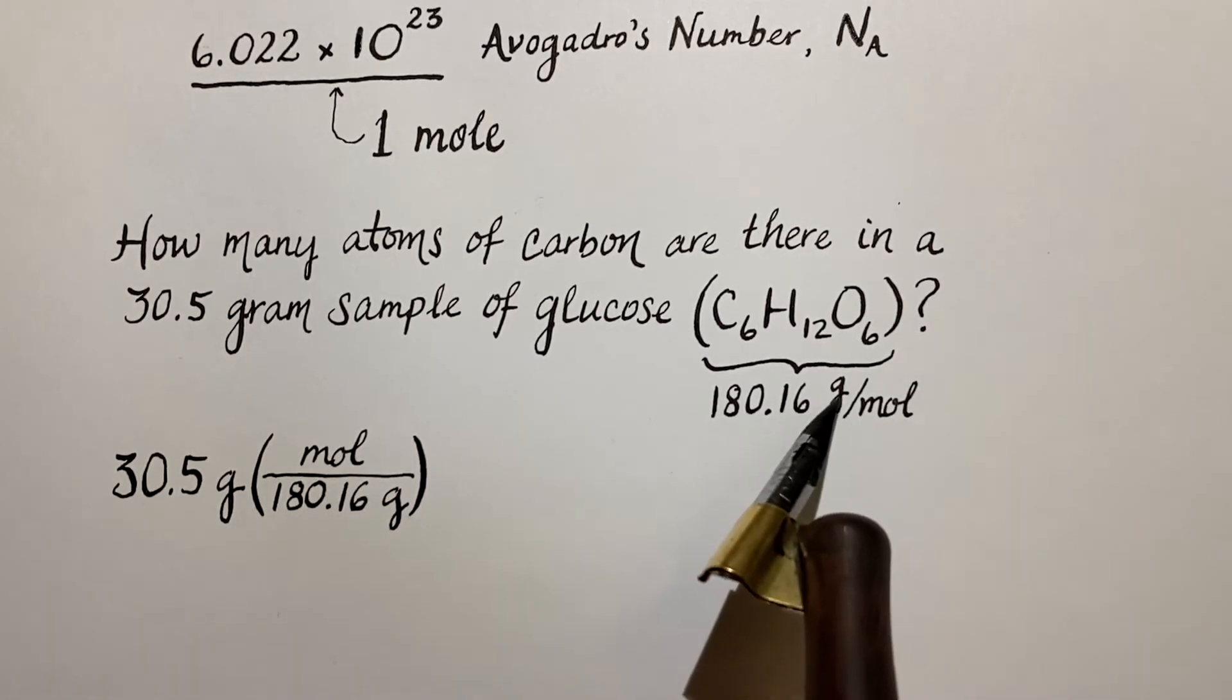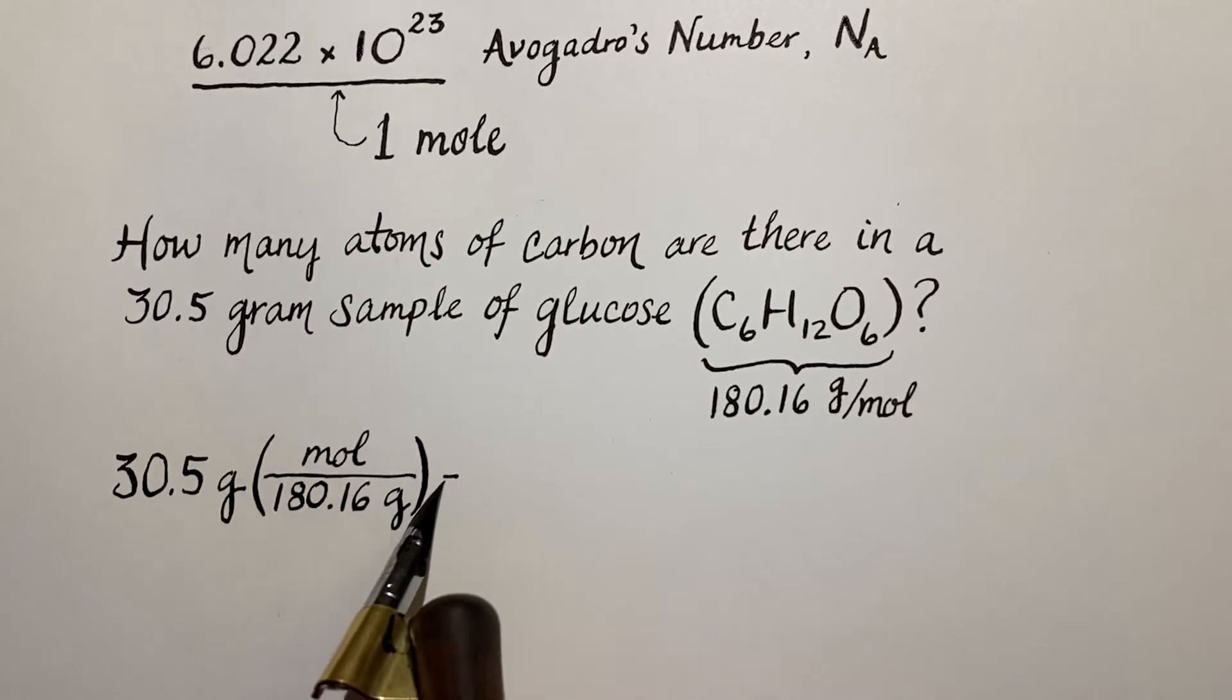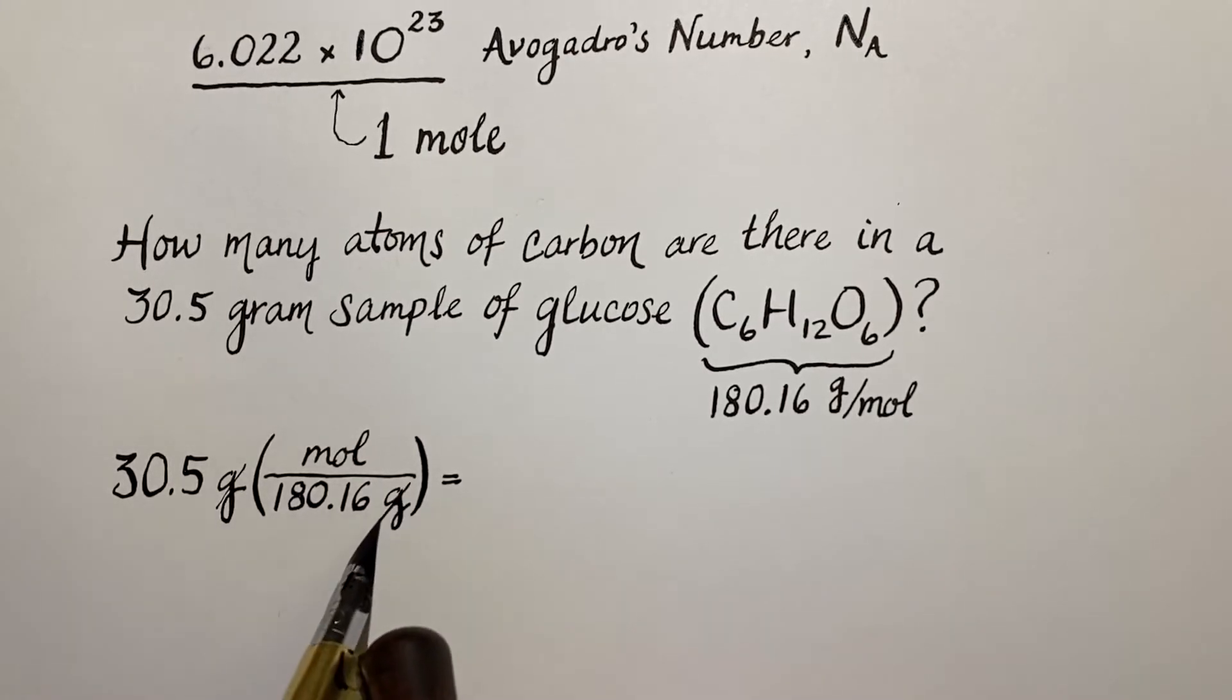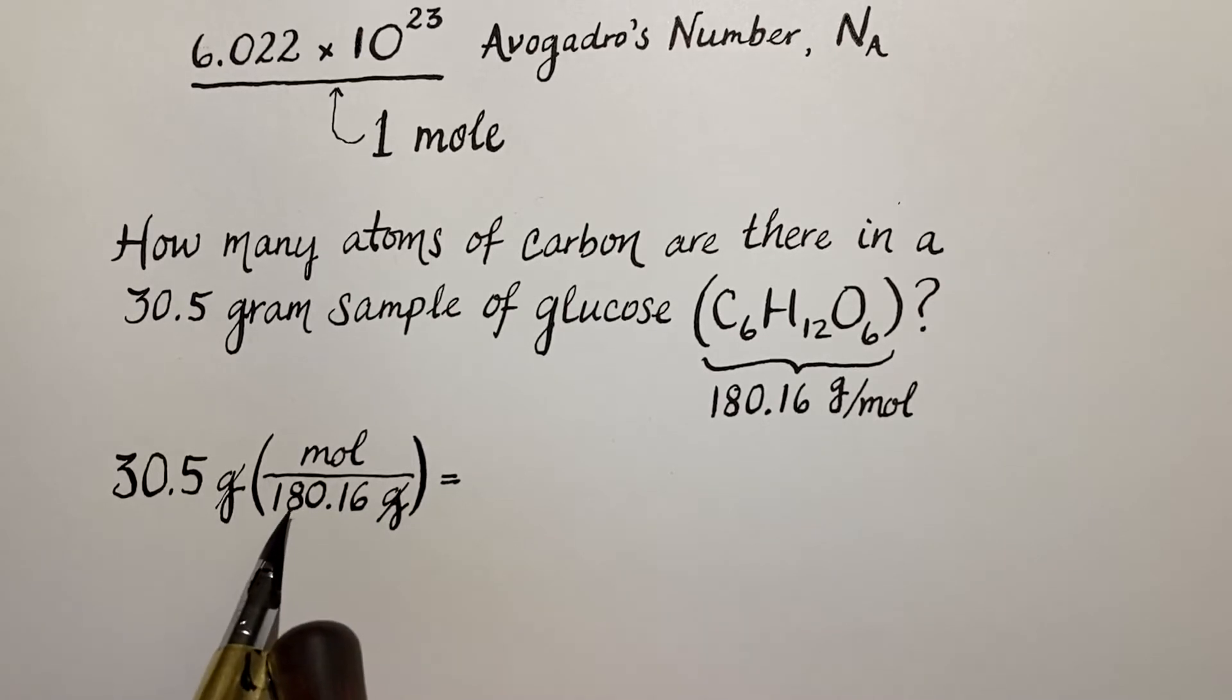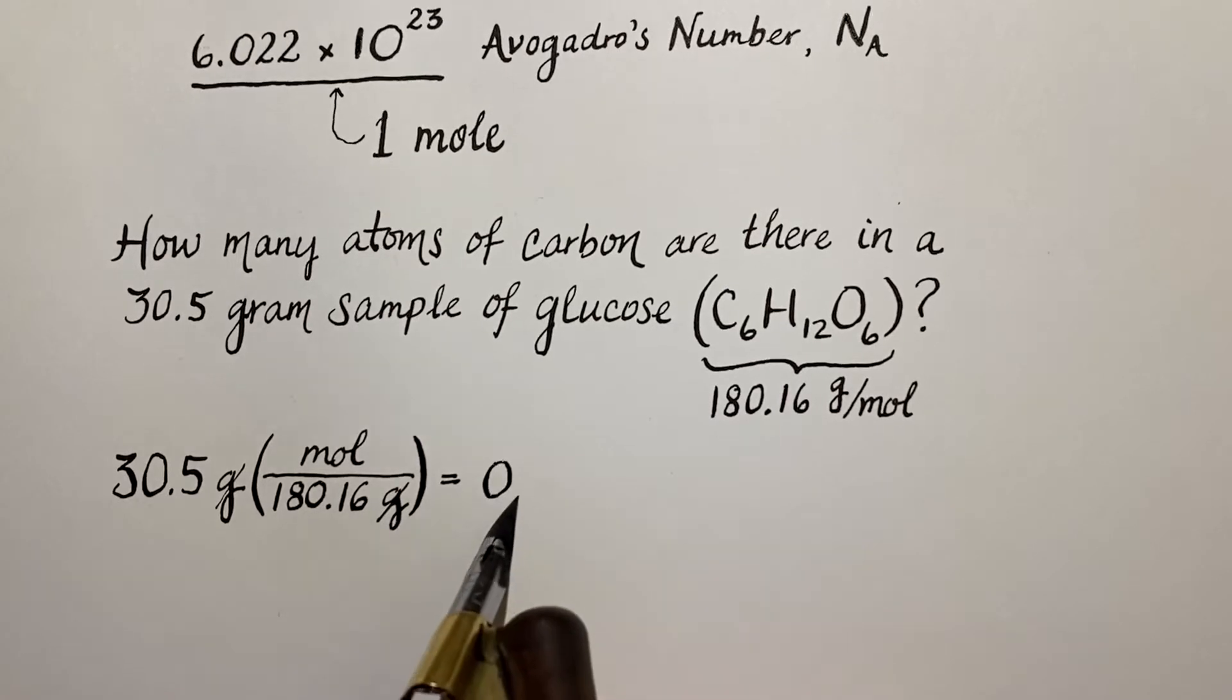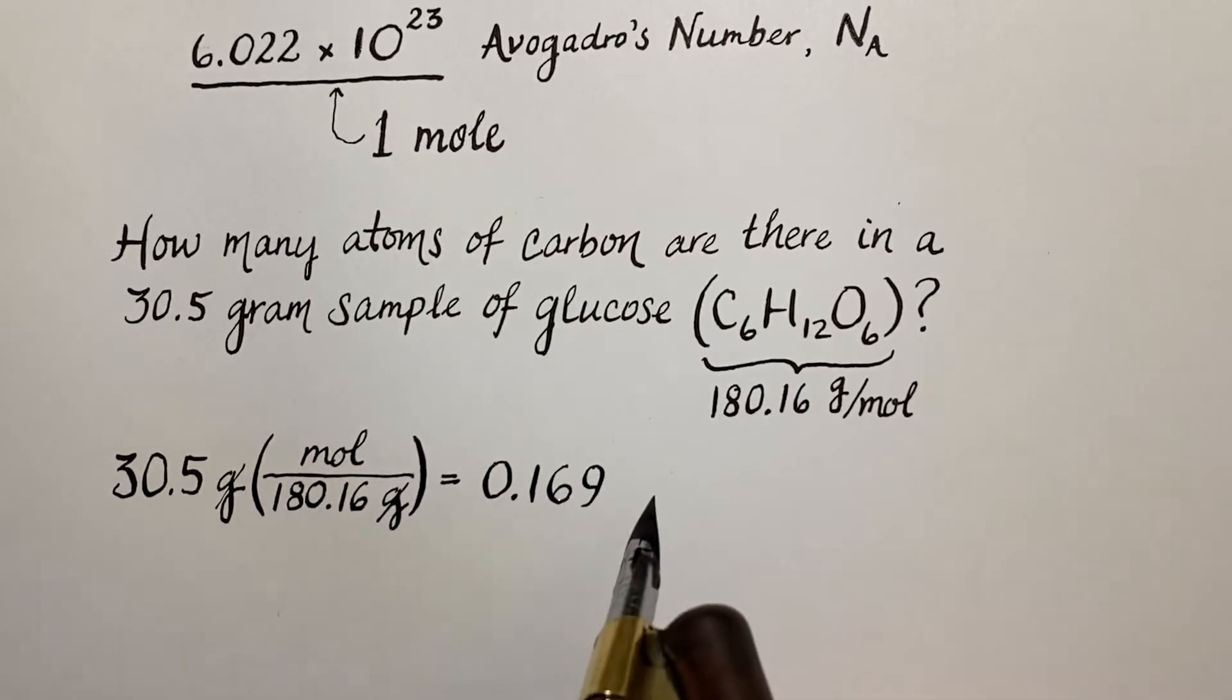Either one of these is correct, so you can use it whichever way you need to depending on what you're converting out of. Here we want grams to cancel, so we take 30.5 and divide.